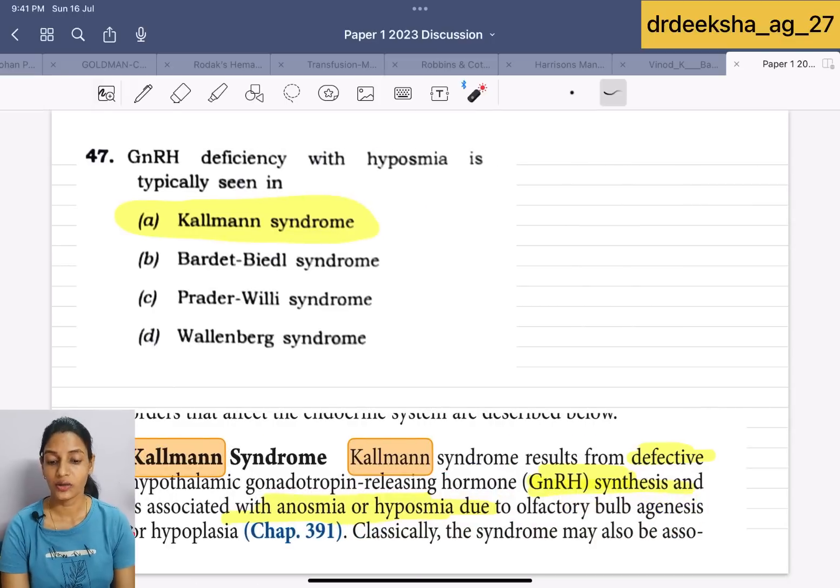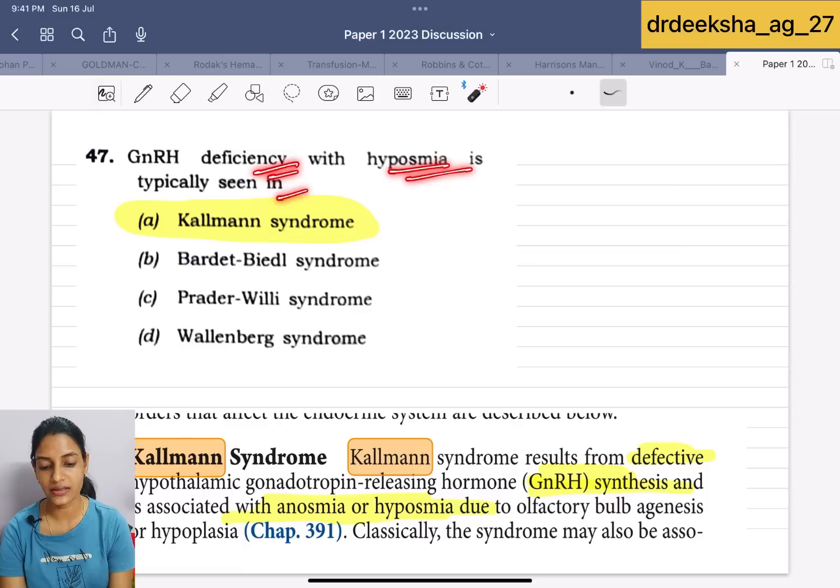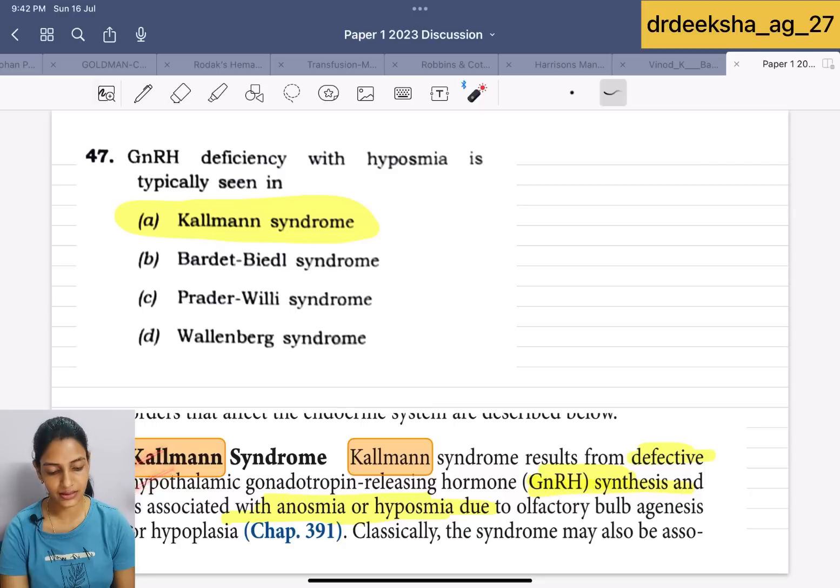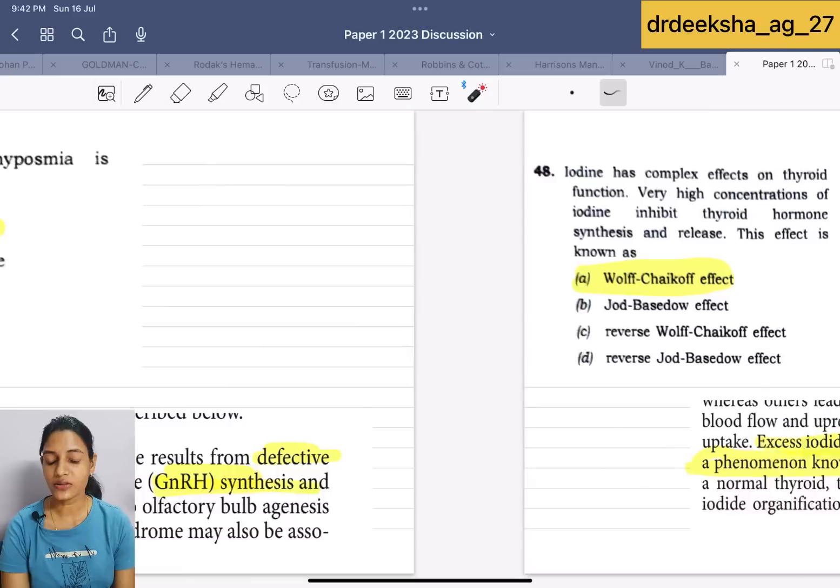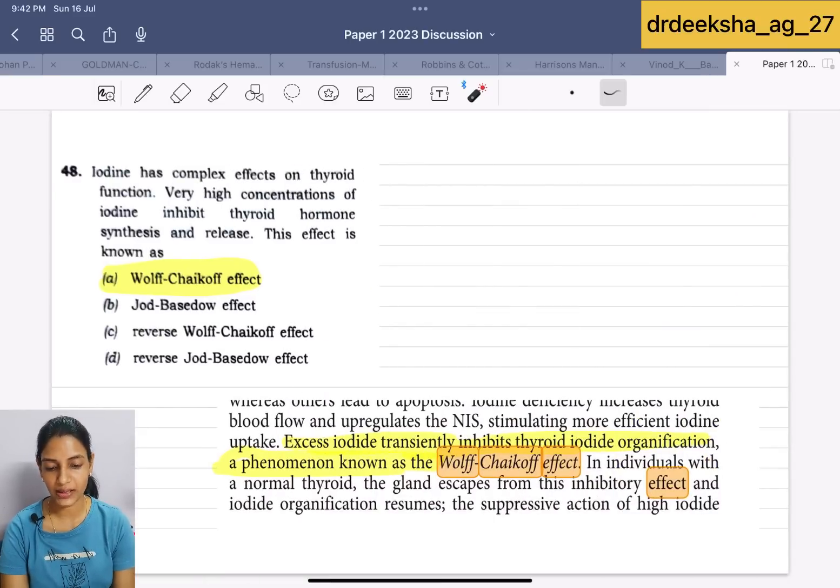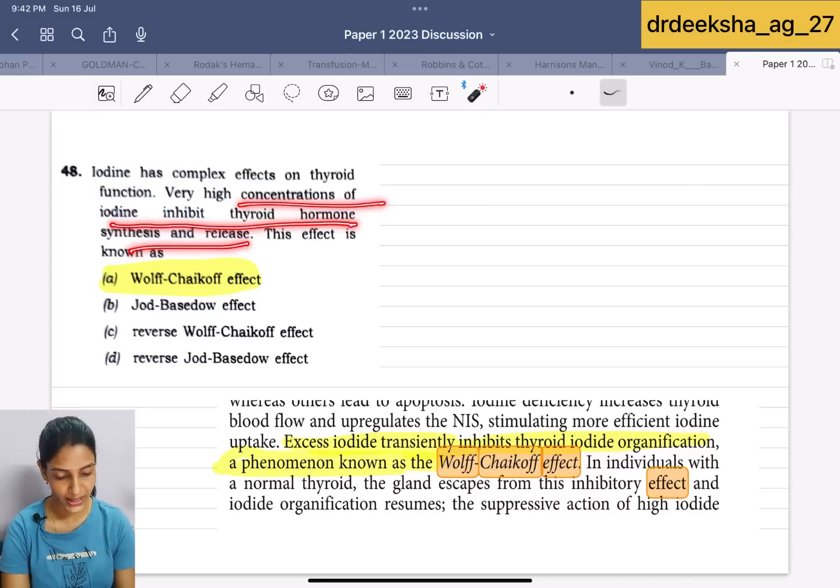Next question is gonadotropin releasing hormone deficiency with hyposmia is typically seen in. Answer is Kallmann syndrome. In the Kallmann syndrome, GnRH synthesis is defective associated with anosmia or hyposmia. Next question is that iodine has a complex effect on thyroid function. Very high concentration of iodine inhibits the thyroid hormone synthesis and release. This effect is known as Wolf-Chaikoff effect.